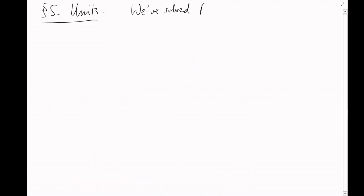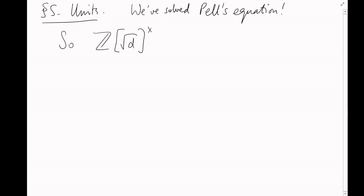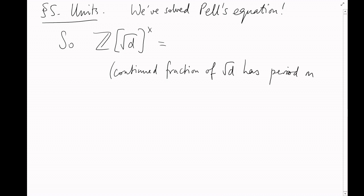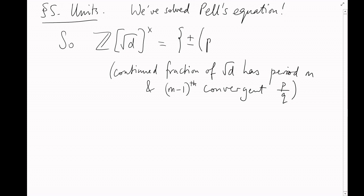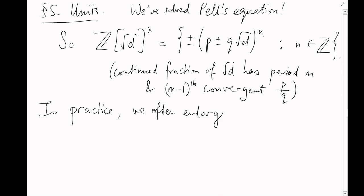Section 5: Units. We've now completely solved Pell's equation. In particular, this gives us all of the units of ℤ[√d]. We find the continued fraction of √d, find its period m, look for the (m−1)th convergent P/Q, and then all units in ℤ[√d] are of the form ±(P ± Q√d)^n as n ranges over all the integers.